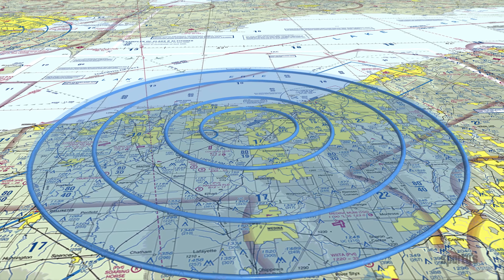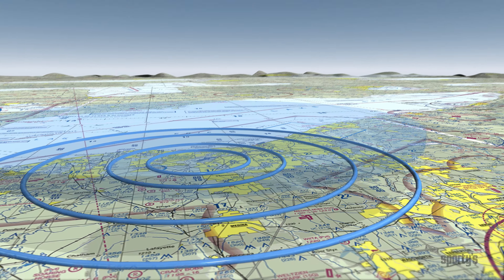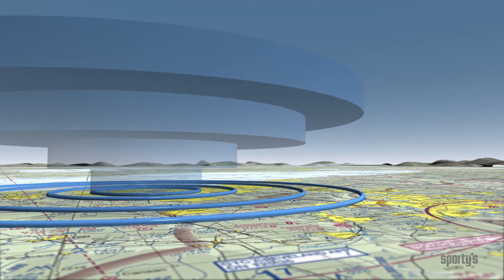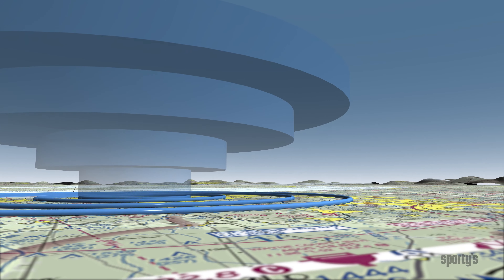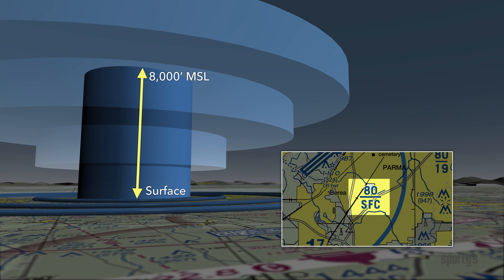Let's look at Cleveland as an example. Class B boundaries are shown with heavy blue lines. There are four layers in all. Let's begin in the middle and work our way out. The top of the airspace is 8,000 feet MSL, and in the vicinity of Cleveland International, it extends to the surface.